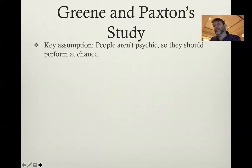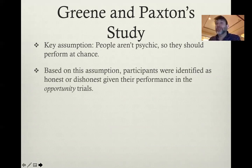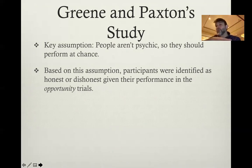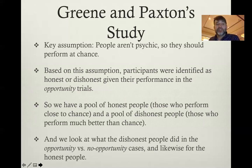Green and Paxton's study had one key assumption: people are not psychic. Whether or not they have the opportunity to predict beforehand, they should perform at chance — about 50% correct on a coin toss. Based on this assumption, we can identify whether participants are honest or dishonest based on their performance in the opportunity trials. Dishonest participants' performance in guessing correctly will go way up in the opportunity-to-cheat trials but remain at chance in the no-opportunity trials, whereas honest participants will remain at chance throughout. This gives us a pool of honest people and a pool of dishonest people, and we look at their brain activity and response times.